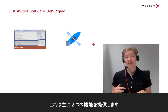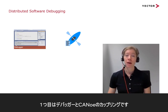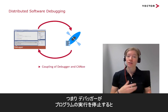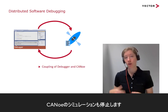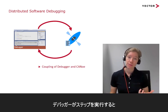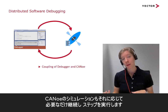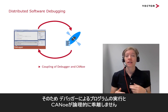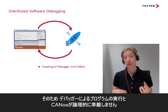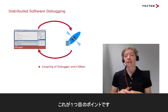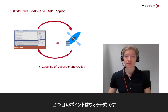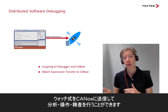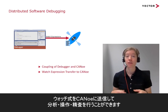With distributed software debugging, we loosen it up to some kind of white box using a debugger. This gives us two main features. First, we can couple the debugger in Canoo, so whenever the debugger stops execution and goes into a break, the Canoo simulation will also go into a break. When the debugger steps, Canoo steps and continues as long as the step needs, so the execution of the program in Canoo doesn't diverge logically. The second feature is watch expressions — we can transfer watch expressions into Canoo to analyze them and work with them.